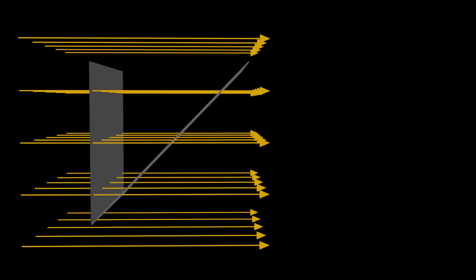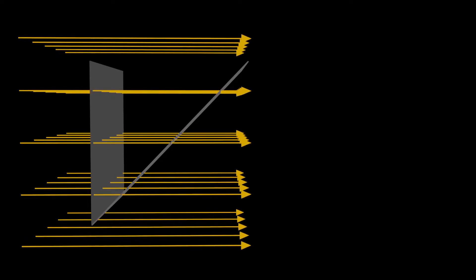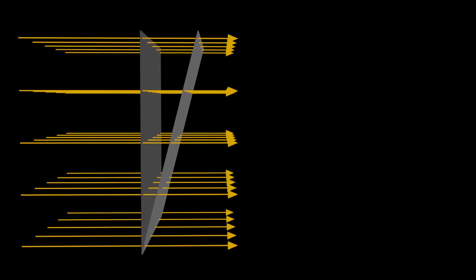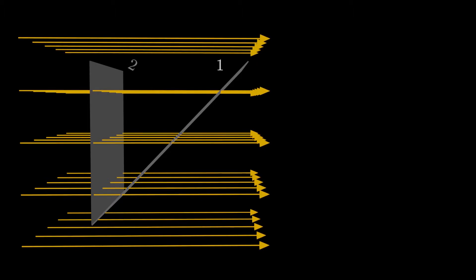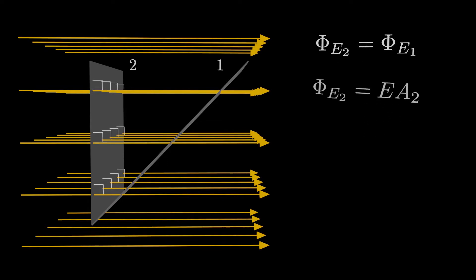Where am I going with all this? Well, surely the number of field lines going through the second perpendicular sheet is the same as the number of field lines going through the first sheet. It doesn't matter what angle we turn through — as long as the second sheet is a perpendicular shadow of the first sheet, both see the same number of field lines. If both sheets see the same number of field lines, then the flux through both sheets is exactly the same. So if we can find the area of the second sheet, we can use that formula we started out with: the magnitude of E times the area of the second sheet gives us the electric flux, which is exactly the same as the flux going through the first sheet.